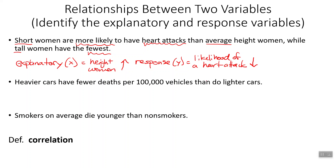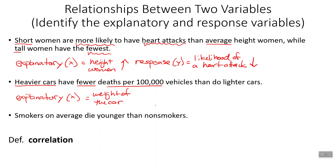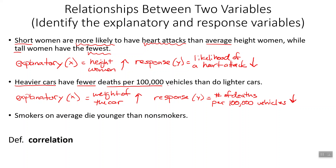Heavier cars have fewer deaths per 100,000 vehicles than do lighter cars. The explanatory variable is the weight of the car — think about it, if you're driving around in a tank, you're probably not going to get killed in a car accident, although you may hurt someone in a smaller car. The response, our Y variable, is the number of deaths per 100,000 vehicles. As weight goes up, the number of deaths goes down.